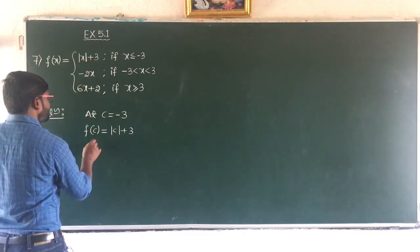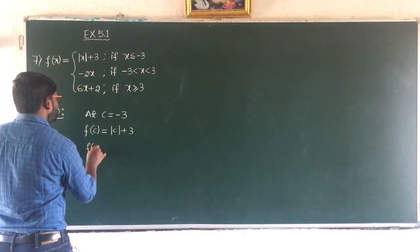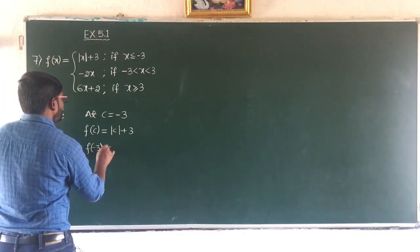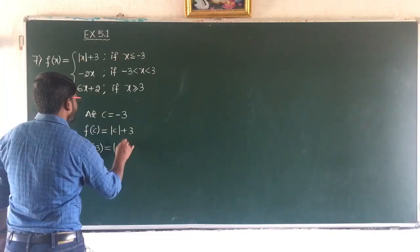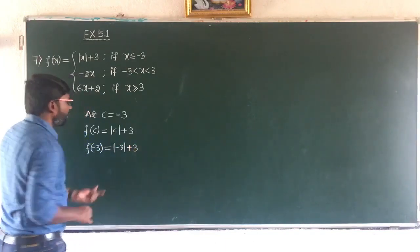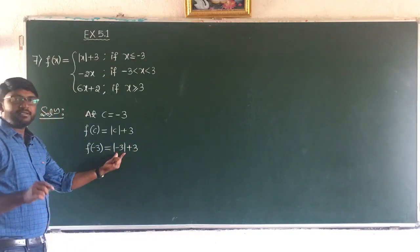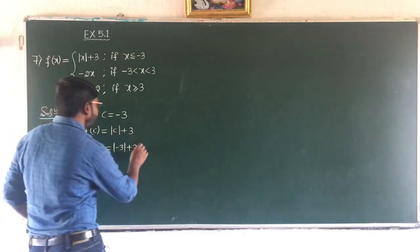f of c where c is minus 3 gives us mod(minus 3 plus 3). Mod of minus 3 is plus 3, and 3 plus 3 will be 6. So the value of the function is 6.